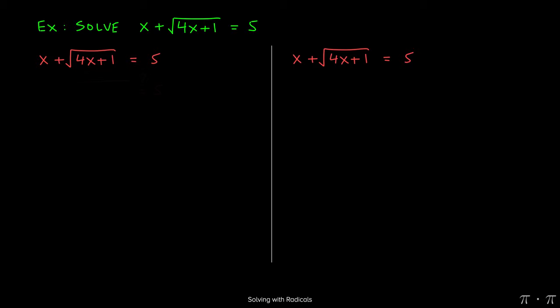So on this slide, I've written the equation twice. On the left-hand side, I'm going to plug in 12. So wherever I see an x, replacing it with 12 gives us 12 plus the square root of 4 times 12 plus 1. And again, we have a question mark above the equal sign because we don't know if 12 will give us a true statement when plugged into the original equation.